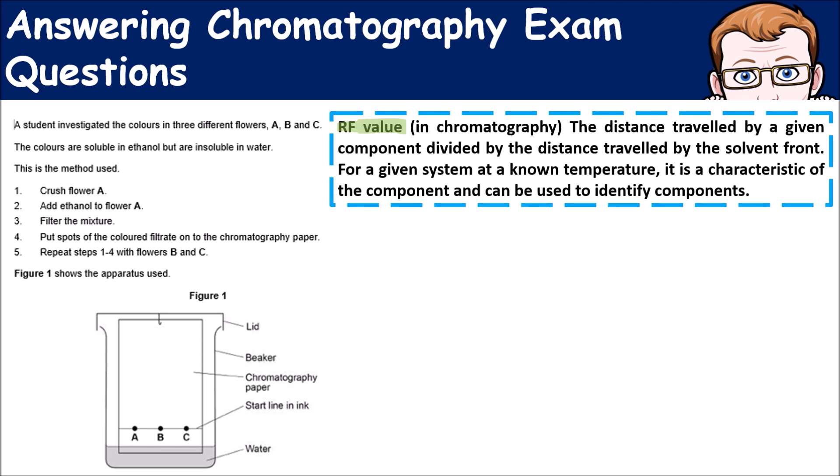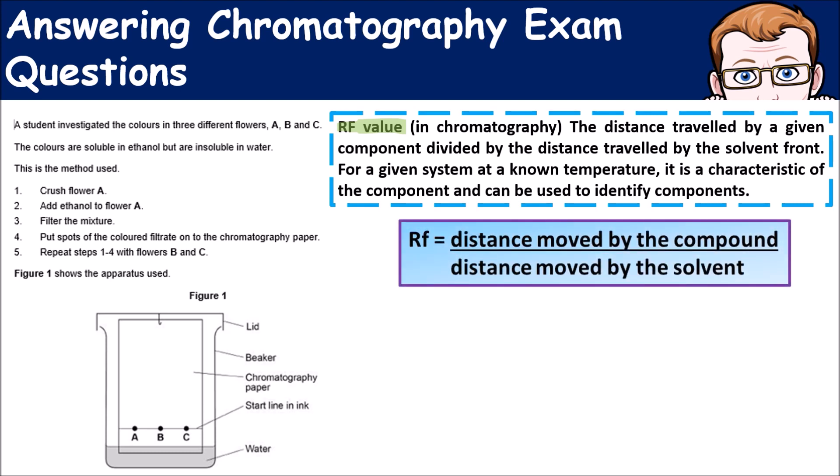So you divide it by the distance traveled by the solvent front. For a given system at a known temperature, a component can be identified using this characteristic.